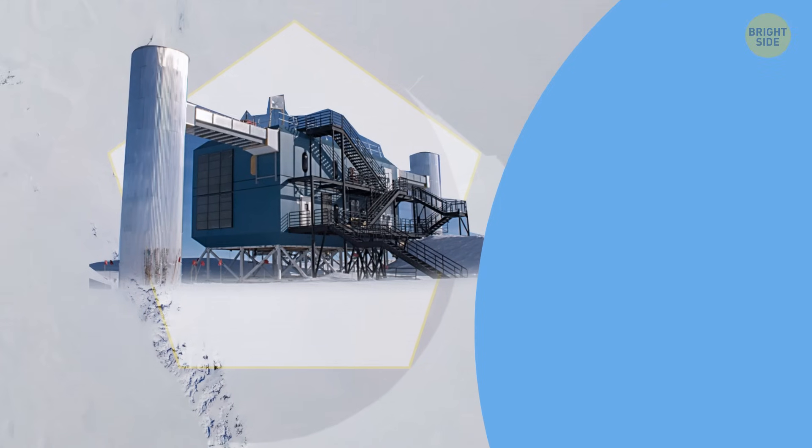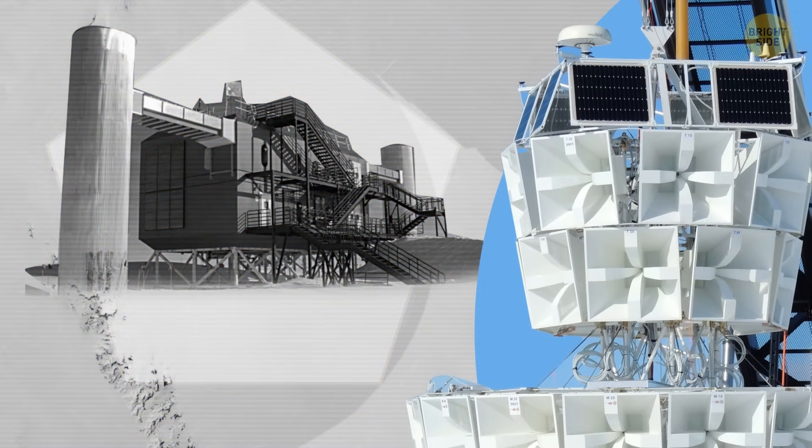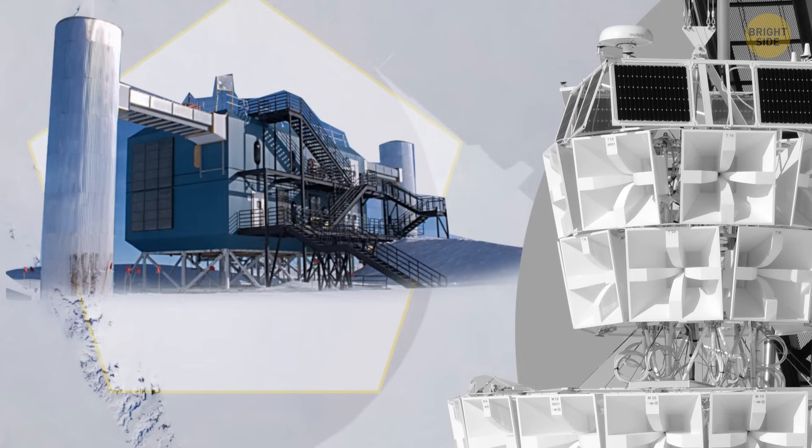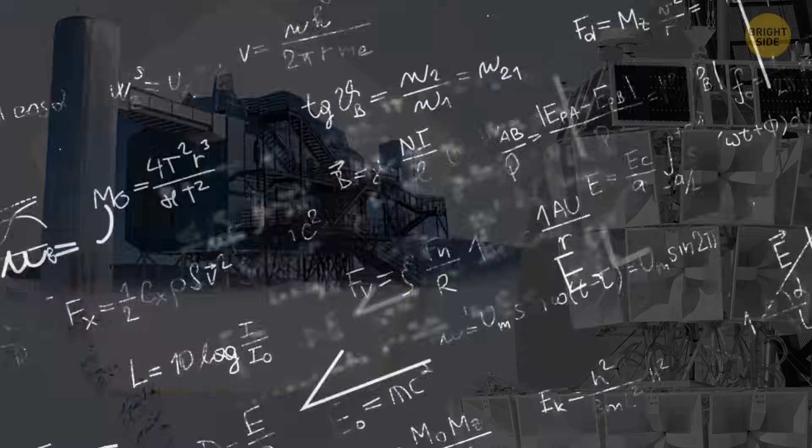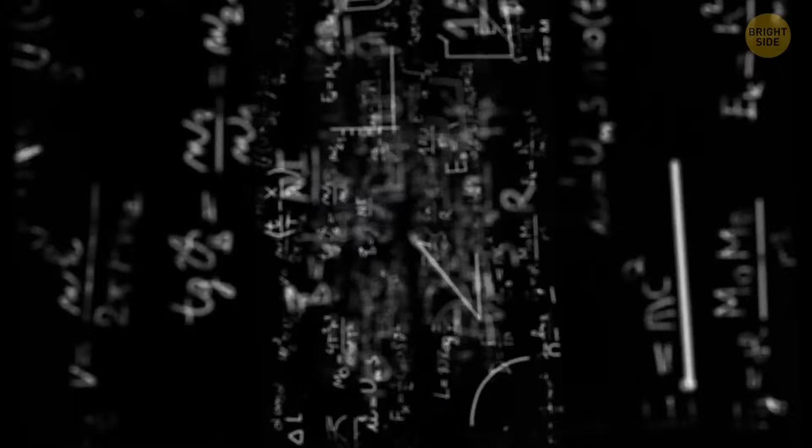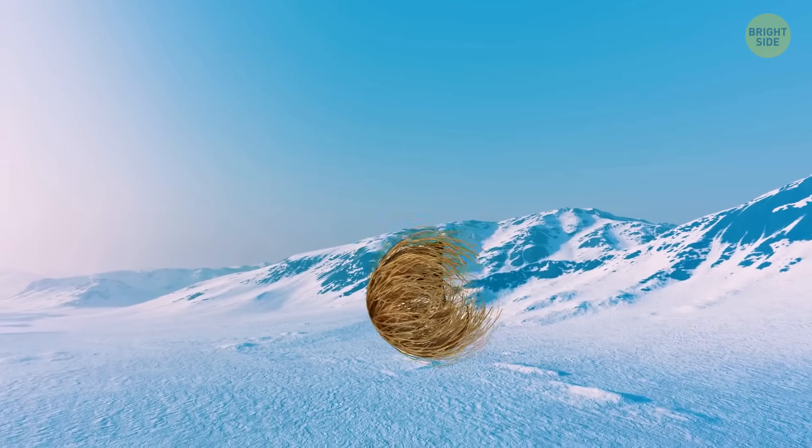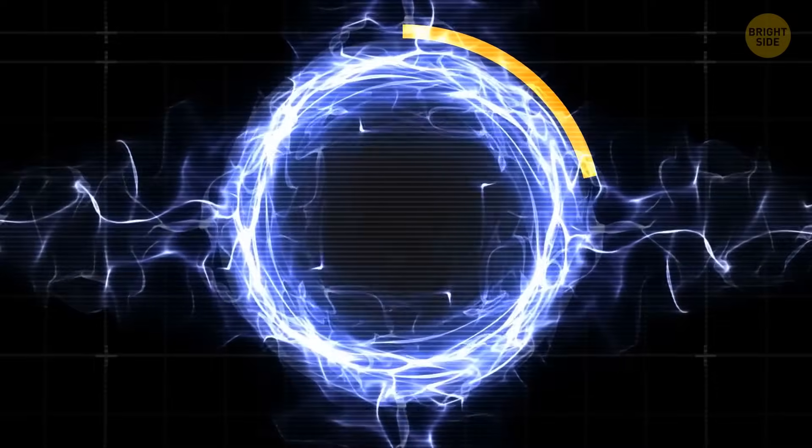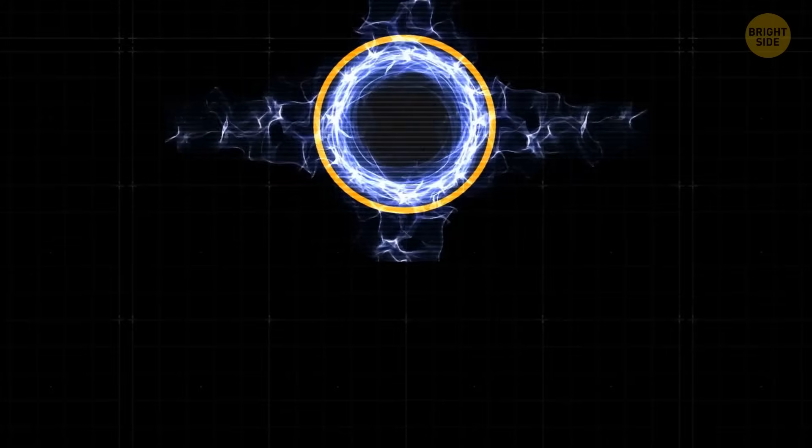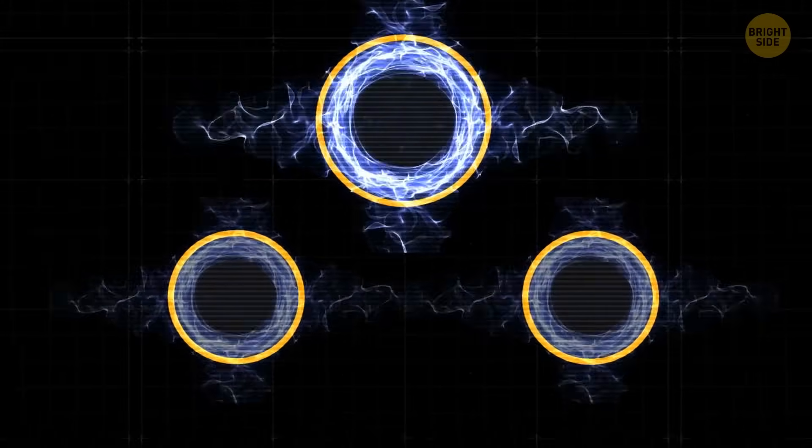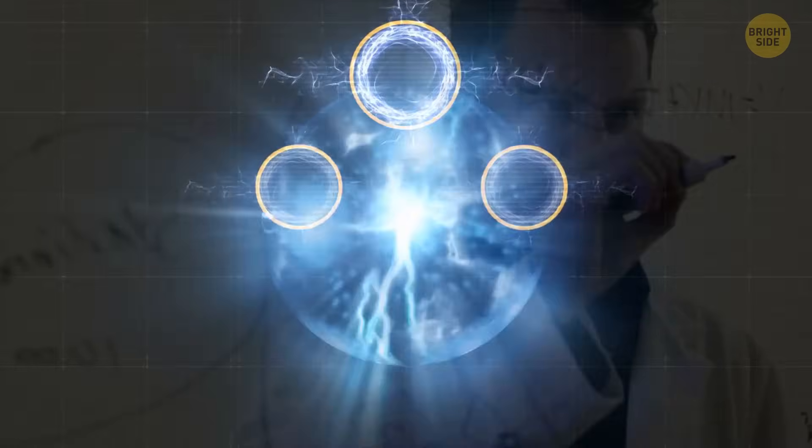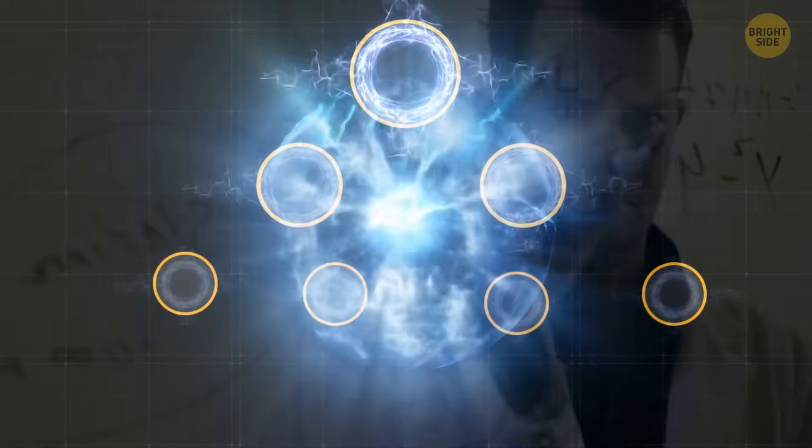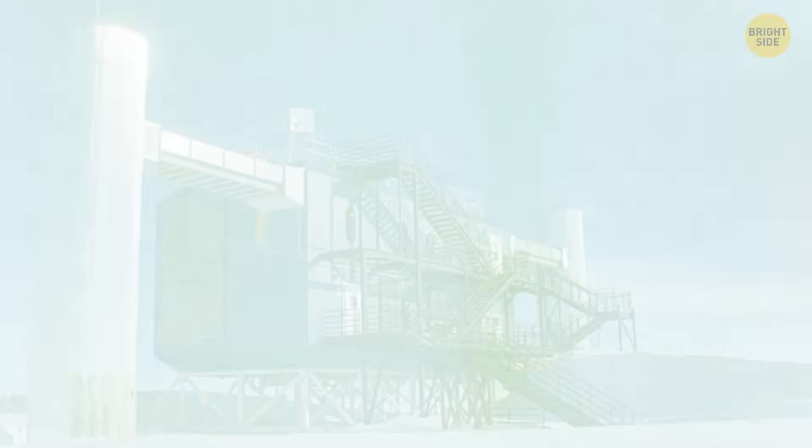ANITA researchers were like, Hey guys, we found some strange radio signals. Could you please check where they come from? No problem, IceCube replied and started their research. And as a result, they found nothing. IceCube didn't detect any signal sources at all. It turned out that these strange particles had basically appeared out of nowhere. How could this be? Scientists tested many different theories, but none of them could explain the situation accurately.